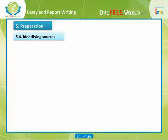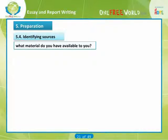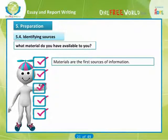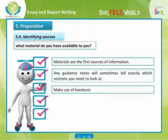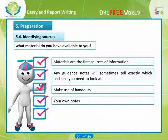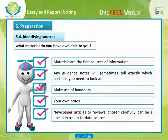Now we move on to identifying sources. What material do you have available? Your course materials are likely to be your first sources of information. Any guidance notes you have been given will sometimes tell you exactly which sections to look at. But don't forget that your course materials encompass more than just texts — make use of any handouts, your own notes from reading, watching, tutorials, observations, or experiments. Newspaper articles or reviews, chosen carefully, can also be a useful extra up-to-date source for some courses.